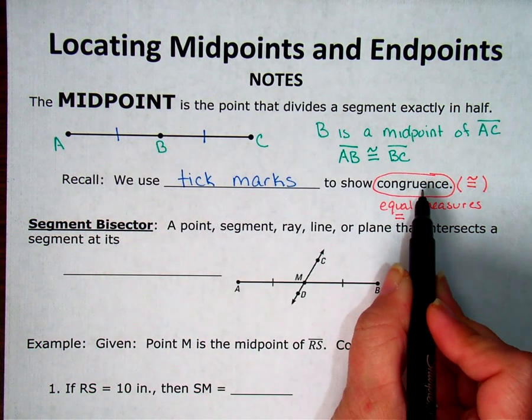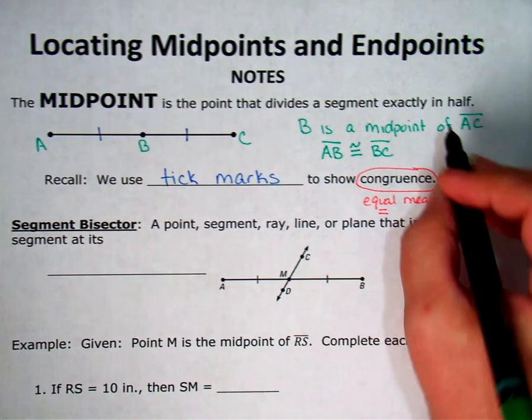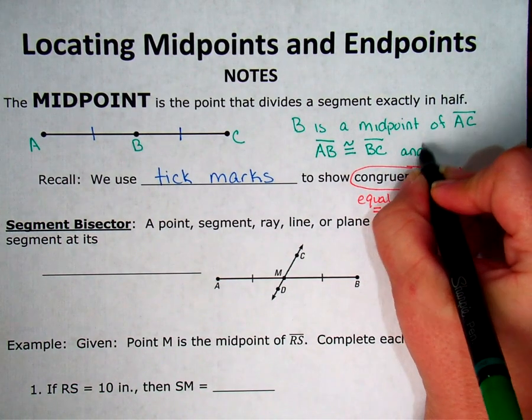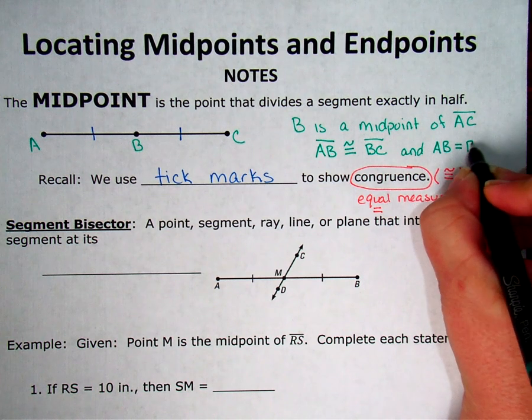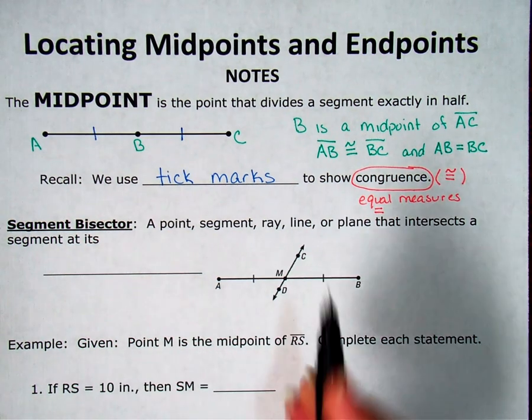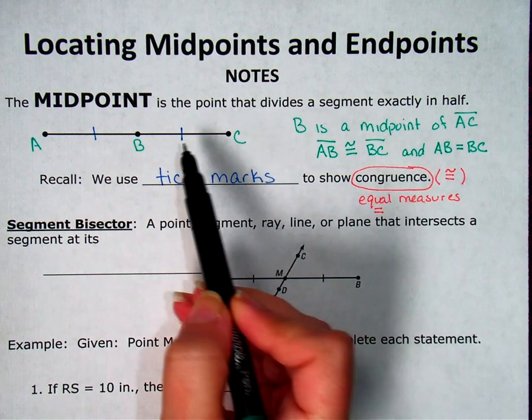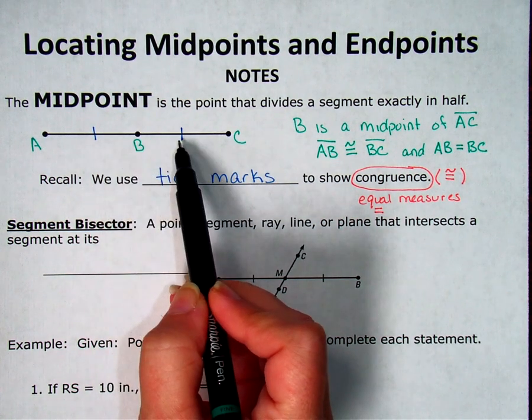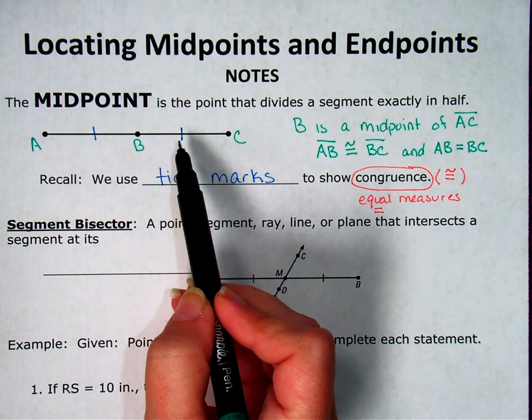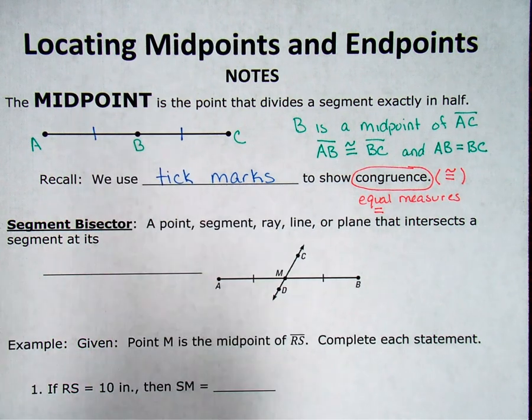Which means, if they're congruent, that means they have equal measures. So that means I can also say the distance from A to B is equal to the distance from B to C. So all three of these I can say only if I see the tick marks, or I'm told I have a midpoint, or I can mathematically prove I have a midpoint.